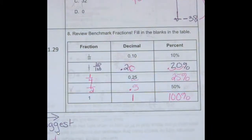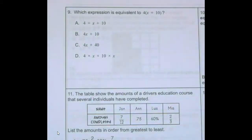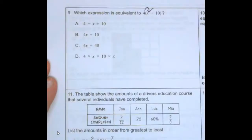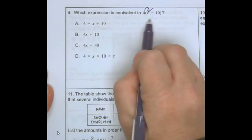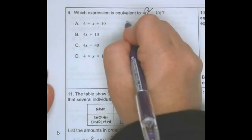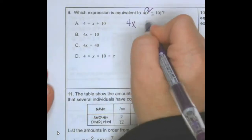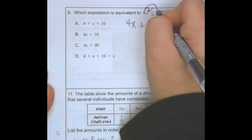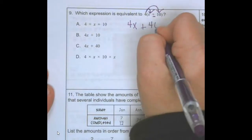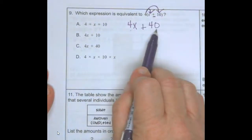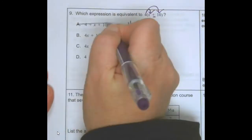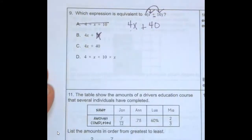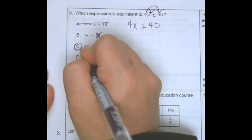Number nine: which expression is equivalent to 4x plus 10? Remember, I distribute the 4 to everything inside the parenthesis. Four times x is 4x, plus four times 10 which is 40. So I have 4x plus 40. It's not this one, it's not this one — it is C.